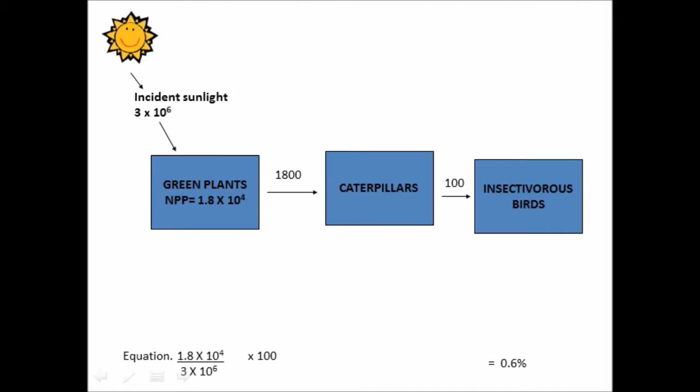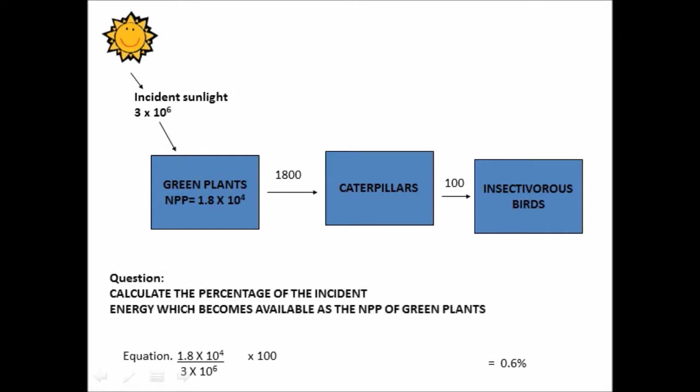And if you're not up to speed on your powers of 10, you can very easily convert those figures into real numbers. So basically, 1.8 by 10 to the 4 is the same as 1, 8 and 3 zeros. So 1 of the 10 to the 4s has been taken up by the decimal place. 3 by 10 to the 6 is 3 million. And so that comes out to 0.6%, a tiny proportion.